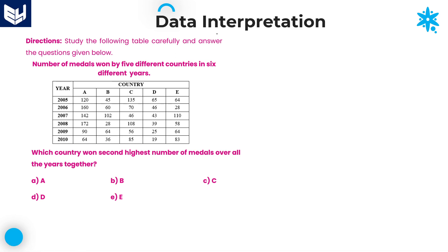Hi everyone, welcome to the session. In this session, I will continue the problems based on tabular data interpretation. First of all, read the information which is provided in this question. The information is about the number of medals owned by 5 different countries in 6 different years, from 2005 to 2010.